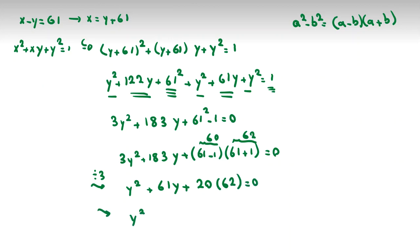If we simplify more, y squared plus 61y plus 1240 equals 0.